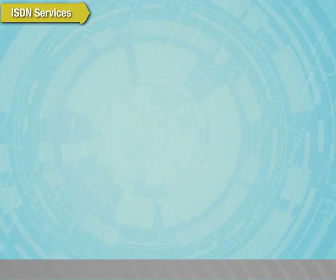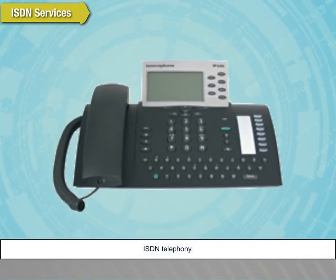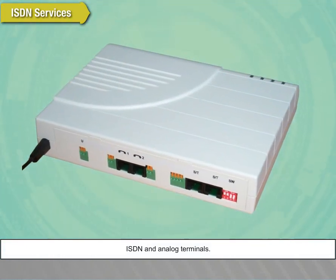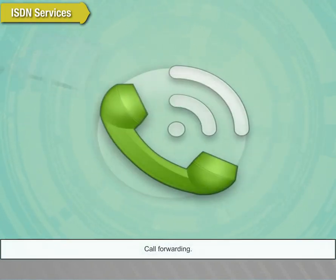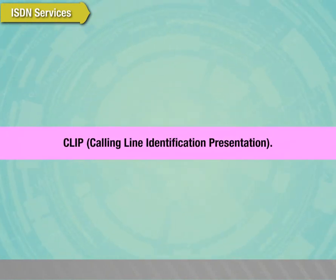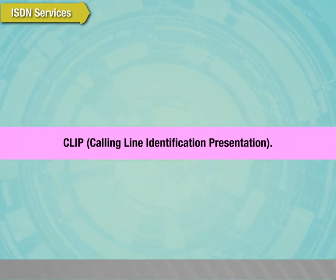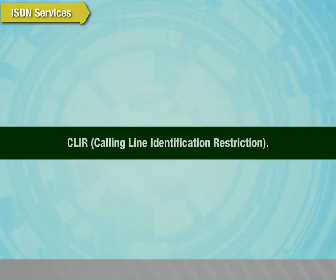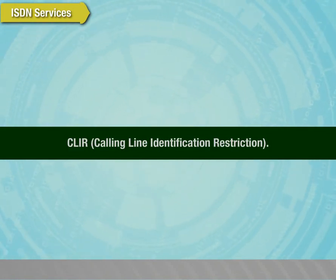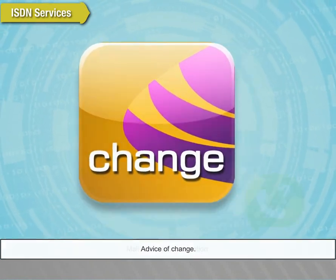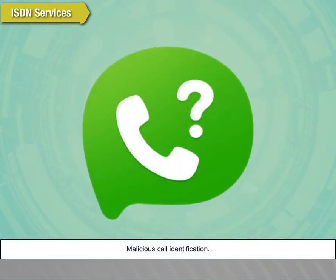ISDN services include: ISDN telephony, ISDN telecopy, ISDN and analog terminals, call forwarding, call waiting, CLIP (Calling Line Identification Presentation), CLIR (Calling Line Identification Restriction), 3-party conference, advice of charge, and malicious call identification.